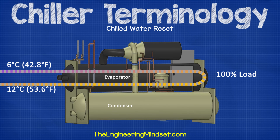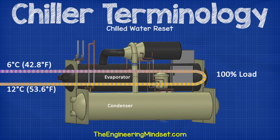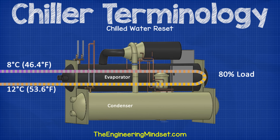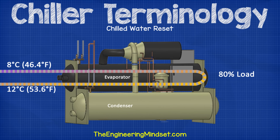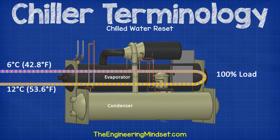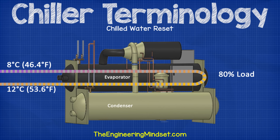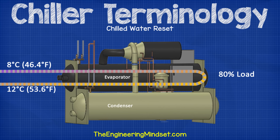Chilled water reset. This is a control strategy used to save energy. The strategy raises the chilled water supply temperature to reduce the lift, which will reduce the amount of work done by the compressor. This will also result in a higher return water temperature, which can lead to increased pump speeds in variable speed systems. It can also lead to low delta T syndrome and needs to be carefully analysed before being implemented.